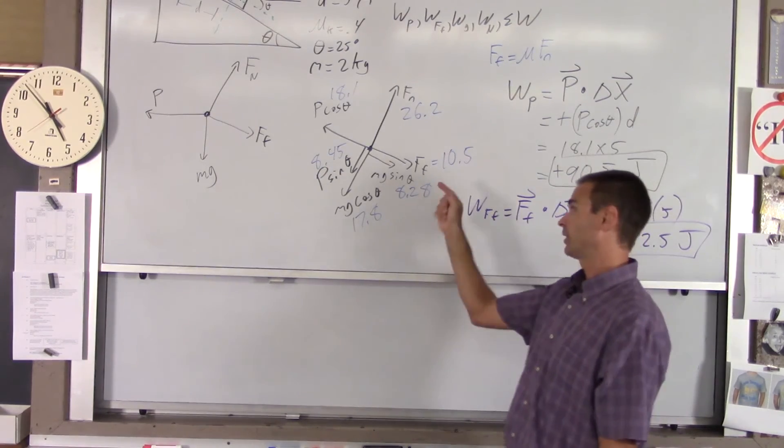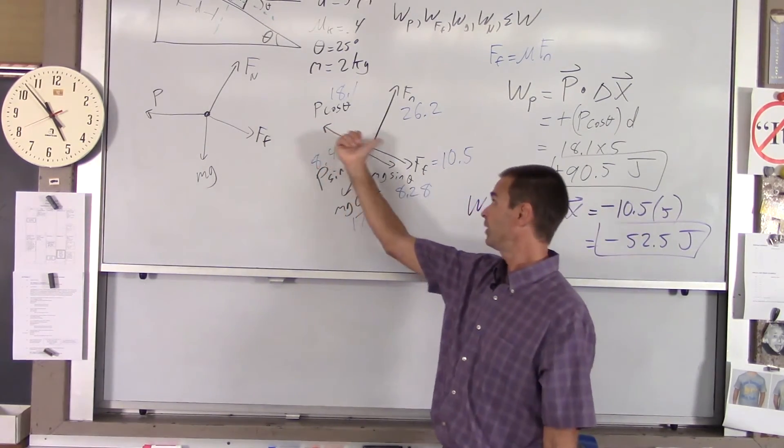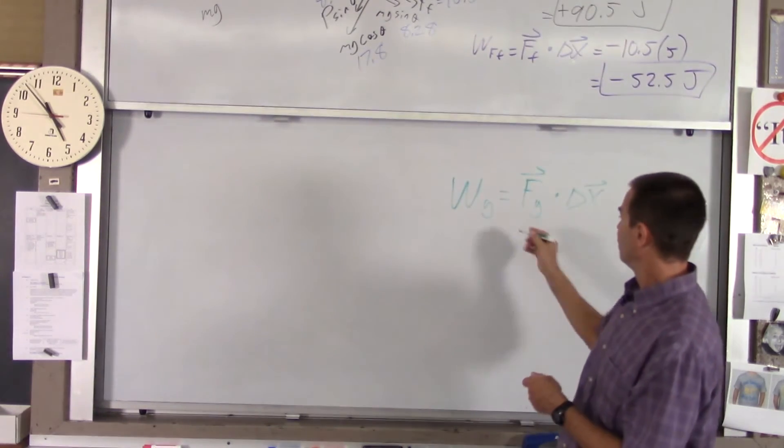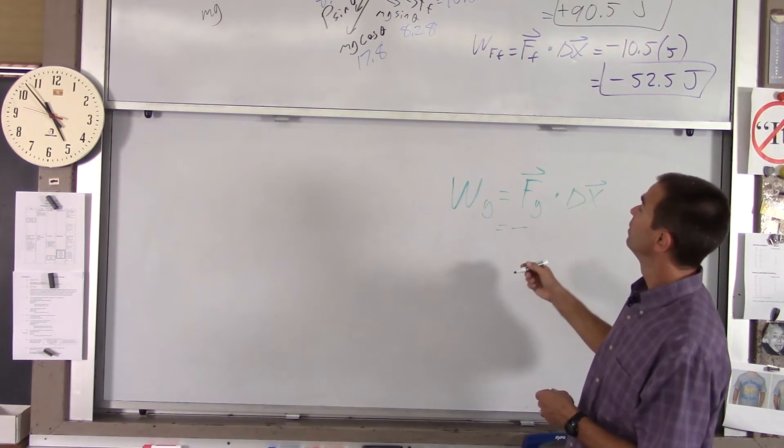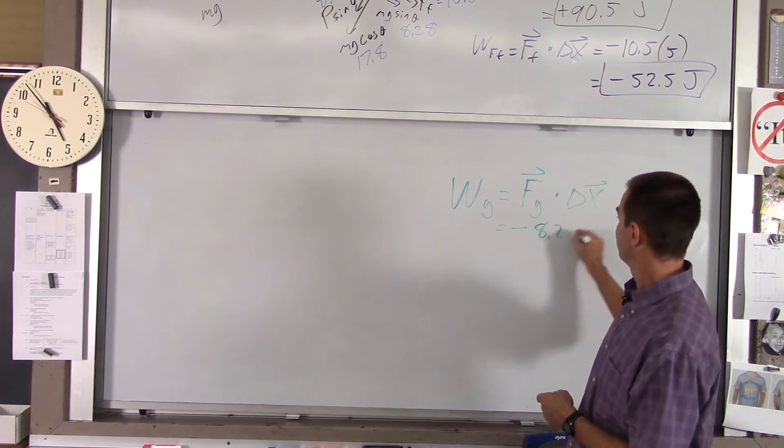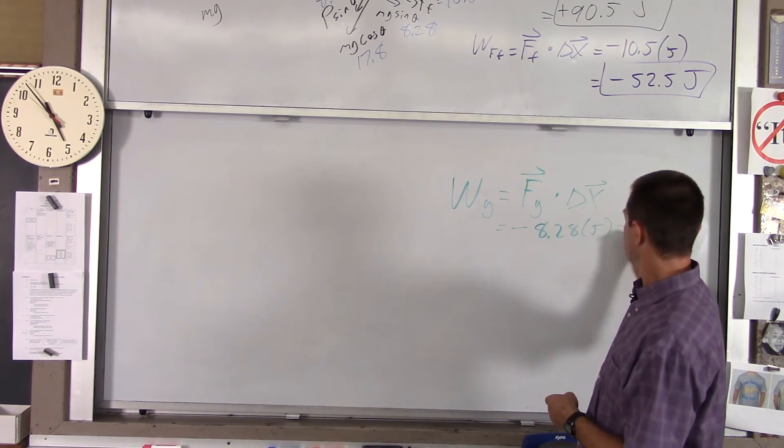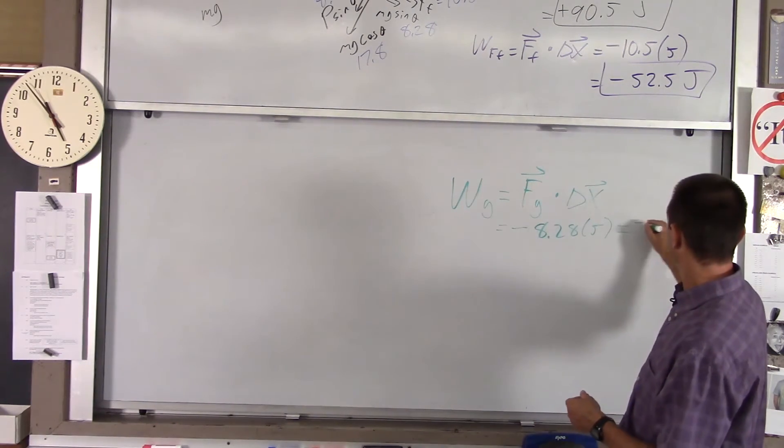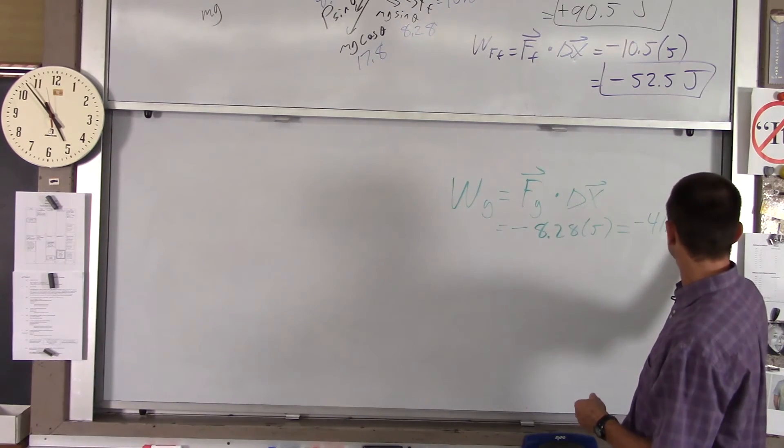Is it plus or minus work? Well, again, the motion's that way but mg sine theta points the opposite way, so it's negative work. So that's negative 8.28 times 5, and if you do that you get negative 41.4 joules.